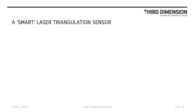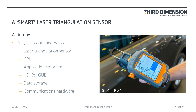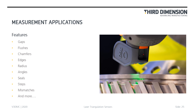Let's look at an example of a smart laser triangulation sensor — an all-in-one self-contained device based on laser triangulation technology. Because of its compact nature, it's possible to include the central processing unit, application software, the GUI, data storage, and communications hardware all in a compact and robust unit that can be deployed by hand or in automated applications. These sensors can measure features such as gaps, flushes, chamfers, edges, radii, angles, seals, steps, and mismatches, and are very commonly used in the automotive, aerospace, and white goods industries.